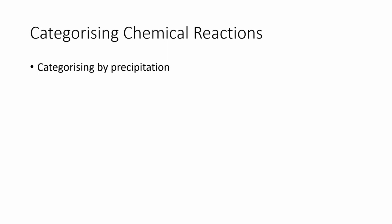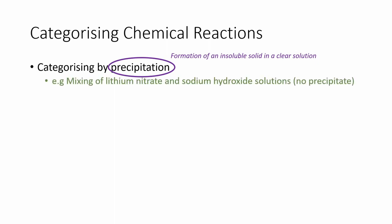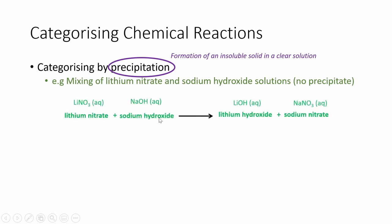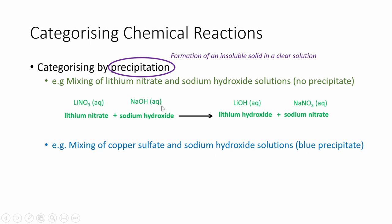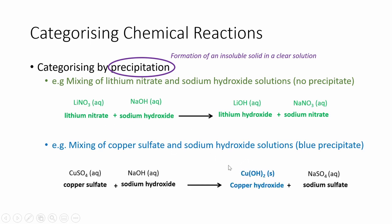We can also categorize chemical reactions by precipitation. In chemistry, the meaning of precipitation differs somewhat from the mainstream definition, which usually refers to condensation during rainfall. In chemistry, precipitation refers to the formation of an insoluble solid in an otherwise clear solution. The mixing of lithium nitrate and sodium hydroxide solutions produces no precipitate — you start and end with clear solutions. On the other hand, the reaction between copper sulfate and sodium hydroxide solutions results in the formation of copper hydroxide precipitate, which is a very distinct blue precipitate.